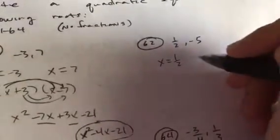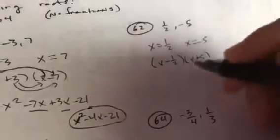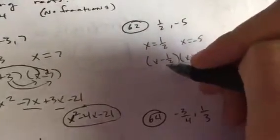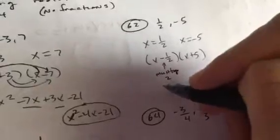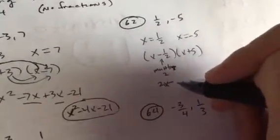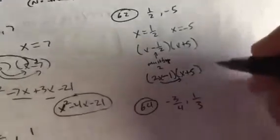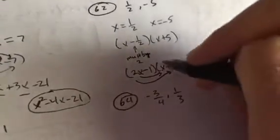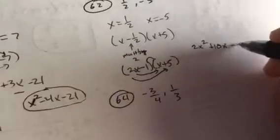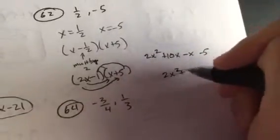Alright. Here we got X is 1 half and X is negative 5. That means in parenthesis, you're going to have X minus 1 half, then X plus 5. Folks, it says no fractions. So, what I want to do is I want to get rid of this denominator 2 by multiplying everything in here by that denominator 2. So, when you do 2 times X, you're going to have 2X. When you do 1 half times 2, it's just 1. So, that's going to become 2X minus 1. Now, you'll FOIL with that. So, you're going to get 2X squared plus 10X minus X minus 5. So, you're going to have 2X squared plus 9X minus 5 as your final answer after you combine those middle terms.